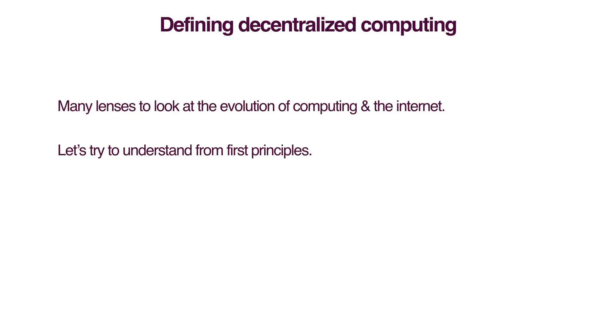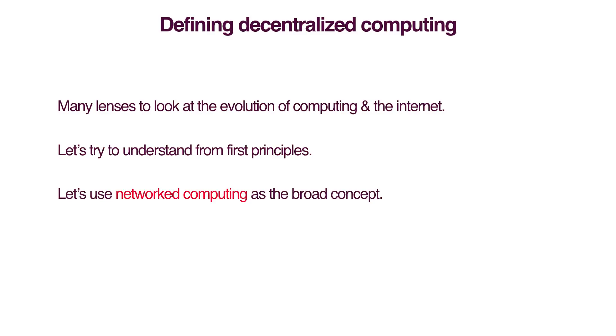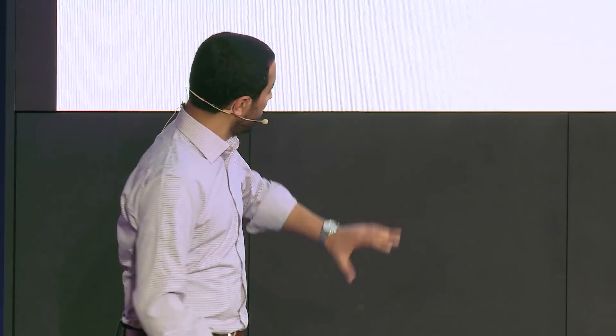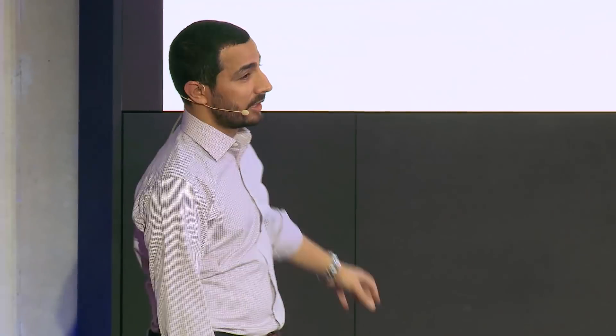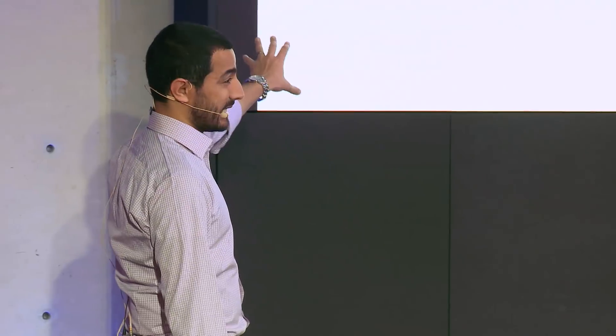In general, we can look at what's happening with the broad term of networked computing. Just go back to first principles — think of it as just a bunch of devices talking to each other over some network. Historically, in the 90s we got the internet and these devices started talking to each other. In the 2000s, we started getting huge companies like Google and Facebook that started collecting all this data and building these clouds. And now we are seeing a decentralized internet — that's a term that has been going around in different projects.